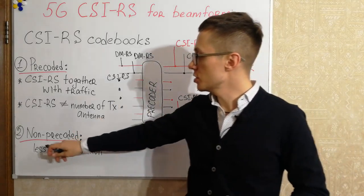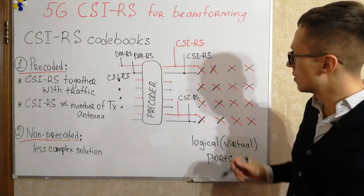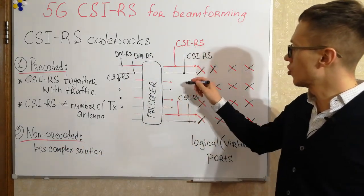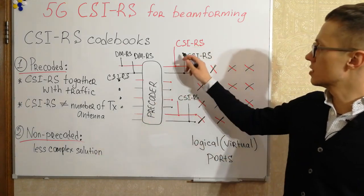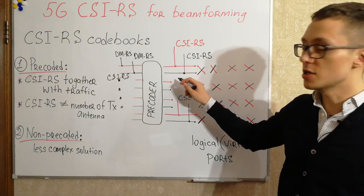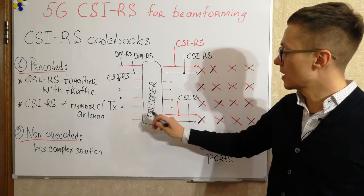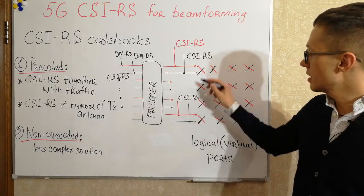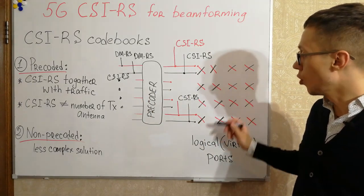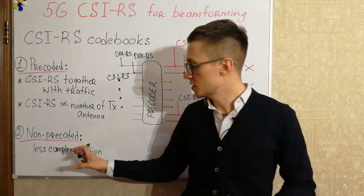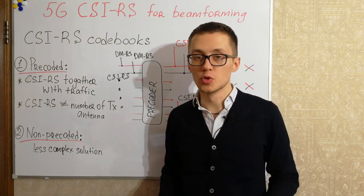The second approach is non-pre-coded. In the non-pre-coded approach, CSI-RS signals are placed per polarization for each layer with a direct connection to logical ports. This approach is simply less complex and can be used as well.